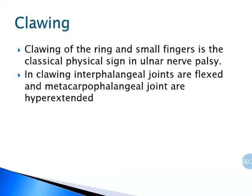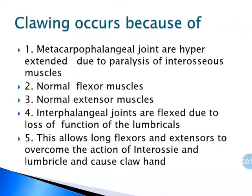What is clawing? Clawing of the ring and small fingers is the classical physical finding in ulnar nerve palsy. In clawing, interphalangeal joints of fingers are flexed and metacarpophalangeal joints are hyperextended. This occurs because metacarpophalangeal joints are hyperextended due to paralysis of interosseous muscles — that is palmar, dorsal interossei and lumbricals.